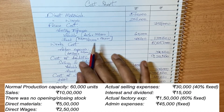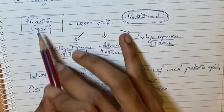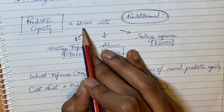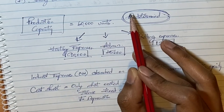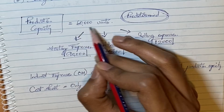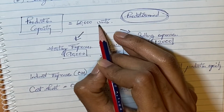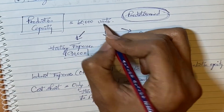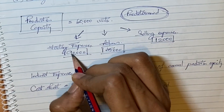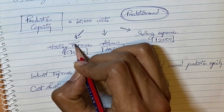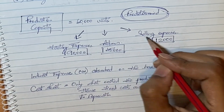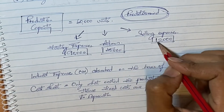Fixed expenses are predetermined based on normal production capacity of 60,000 units. The fixed factory expenses are 90,000, administration is 45,000, and fixed selling expenses are 12,000. These fixed costs need to be absorbed on the basis of normal capacity.